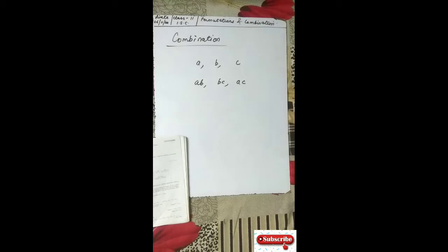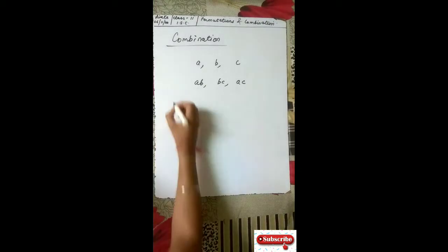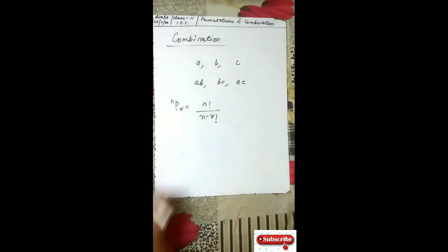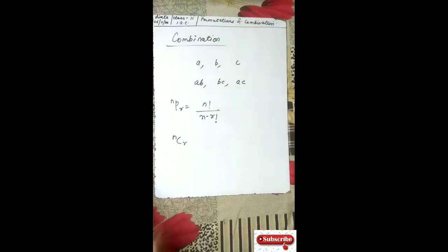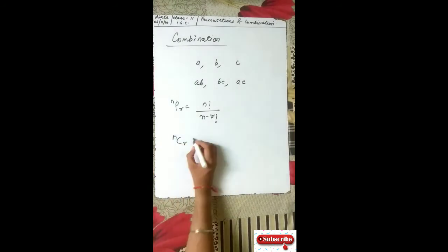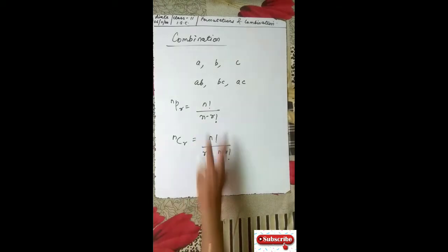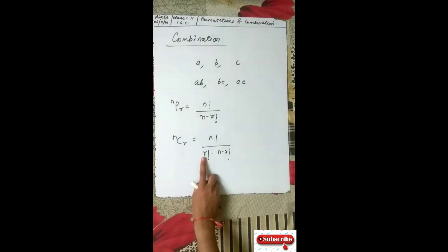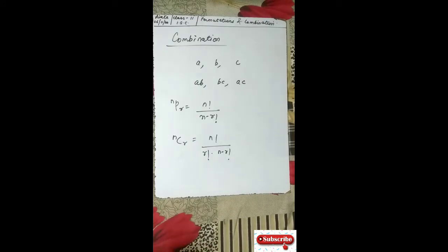You need to keep this in mind. We have seen the formula for permutation which is N factorial upon N minus R factorial. Similarly, for combination: NCR equals N factorial upon R factorial into N minus R factorial. There is not a lot of difference between their formulas — in the combination denominator you just multiply with R factorial. This is the formula for combination.